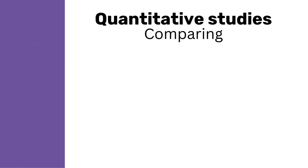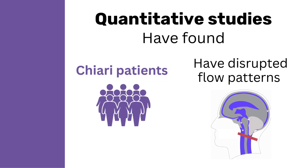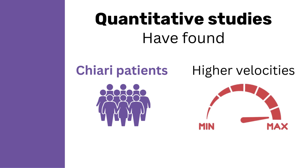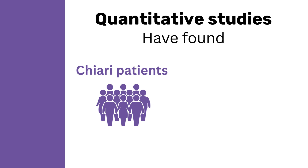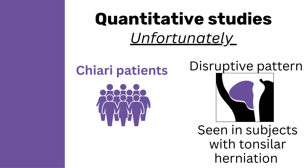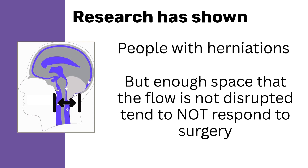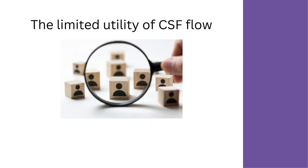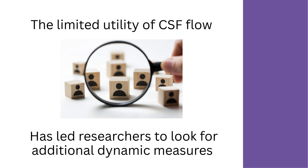Quantitative studies comparing Chiari patients to healthy volunteers have found that Chiari patients have disrupted flow patterns and higher velocities around the herniated tonsils, which return to closer to normal after surgery. Unfortunately, this disrupted pattern is also seen in subjects with tonsillar herniation but no symptoms. However, research has shown that people with herniations but enough space that the flow is not disrupted tend to not respond to surgery. The limited utility of CSF flow has led researchers to look for additional dynamic measures.